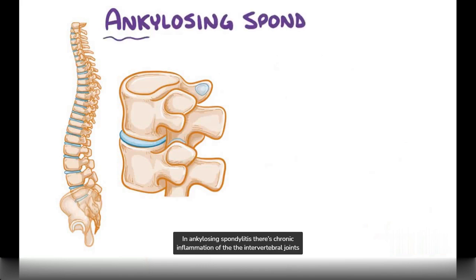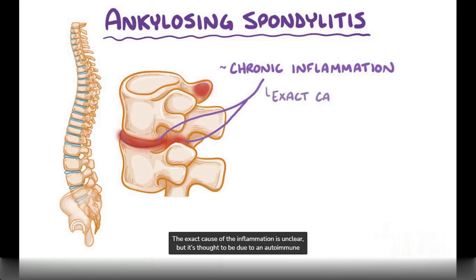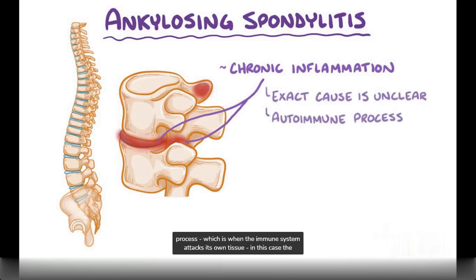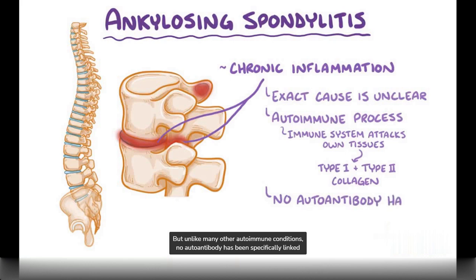In ankylosing spondylitis, there's chronic inflammation of the intervertebral joints and the facet joints of the spine. The exact cause of inflammation is unclear, but it's thought to be due to an autoimmune process, which is when the immune system attacks its own tissue — in this case the type 1 and type 2 collagen in the joints. But unlike many other autoimmune conditions, no autoantibody has been specifically linked to the disease.